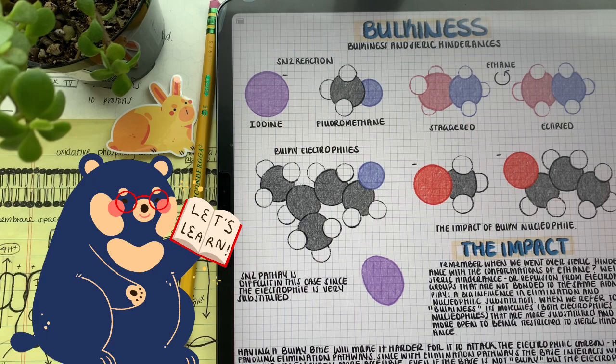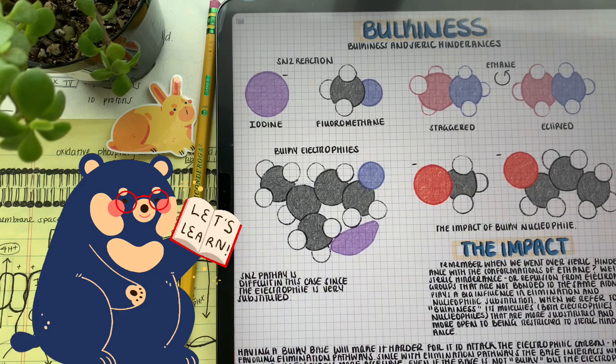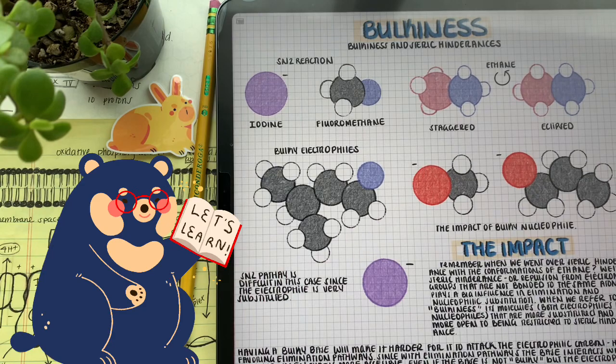This is why elimination is favored when we have a bulky base nucleophile or a bulky electrophile. It's a lot easier to pull off an out of branch hydrogen than it is to go inside and attack the electrophilic carbon.